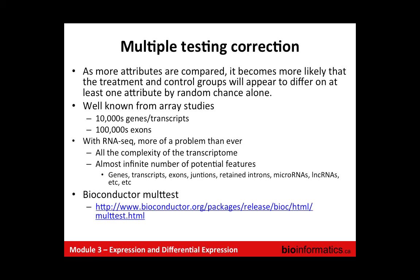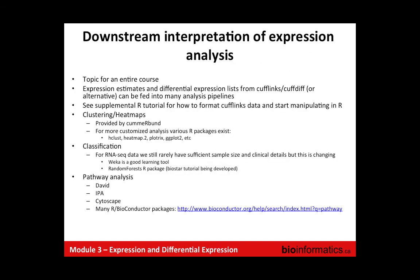A popular package is the Bioconductor multtest package — you can take p-values from your many statistical tests and correct them for multiple testing. CuffDiff actually has this built in, so when you run it you get both raw p-values and corrected q-values. You want to be aware of that when interpreting your differential expression data.